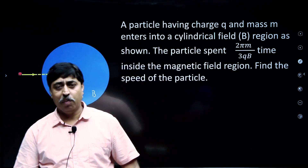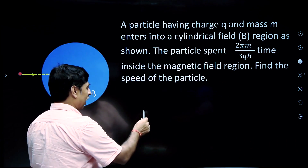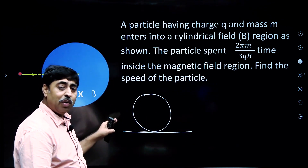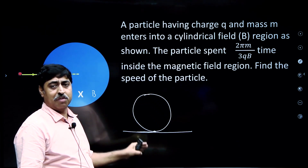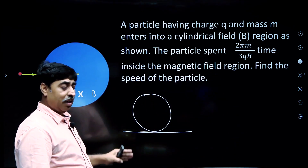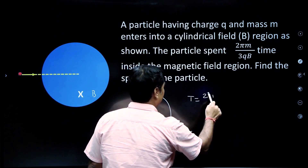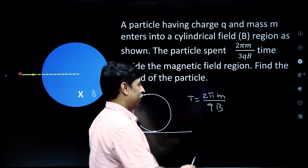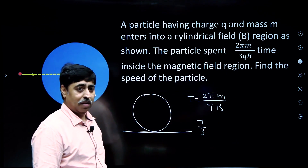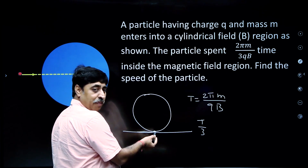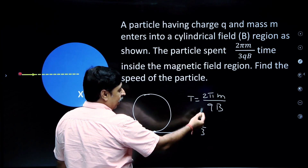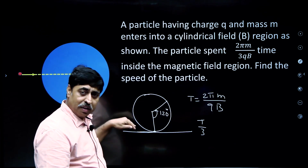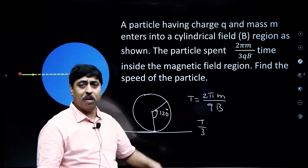If the magnetic field were present everywhere into the plane of the board, then the particle would have gone into a circular path. The time period of circular motion would have been 2πm/qB, and this time period is independent of the speed of the particle. The question says the particle spent one-third of this time, T/3, inside the magnetic field region. So if the particle spends T/3 time inside the magnetic field, it must have rotated through an angle of 120 degrees.